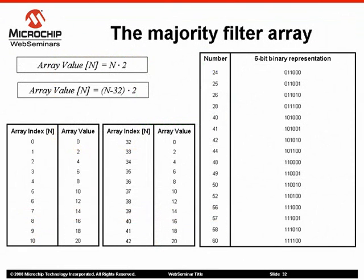The 64 array values are determined as follows. The first 32 numbers are the index number multiplied by 2. The last 32 values are filled out by subtracting 32 from the index value and multiplying the result by 2. There are 16 unique array index numbers that represent the true-to-false condition.